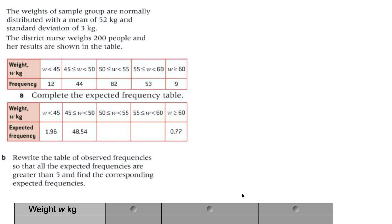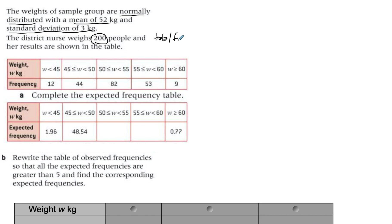In this example, we have a weight sample of a group that is normally distributed — that's the key term from the beginning. We're given the mean and the standard deviation. The district nurse weighs 200 people, so 200 is our total frequency. We're given a table and the question asks us to produce the expected frequency table, since for a normally distributed data set we expect certain frequencies in each interval.